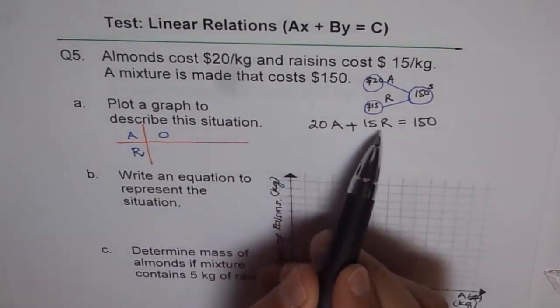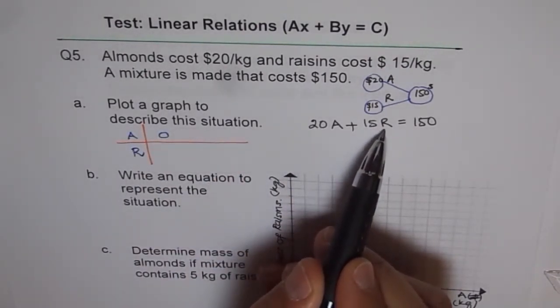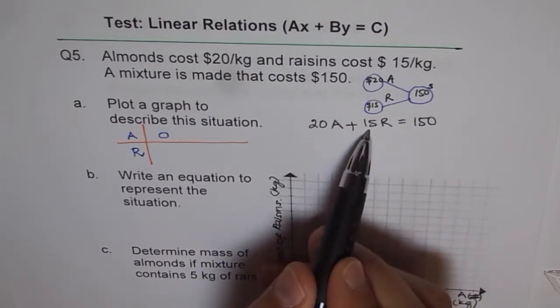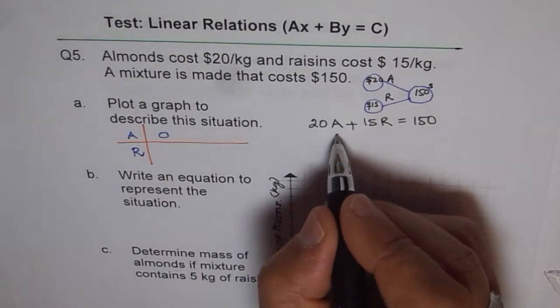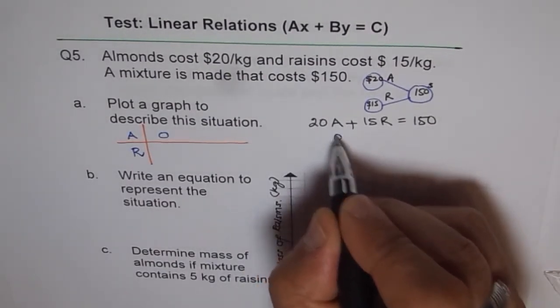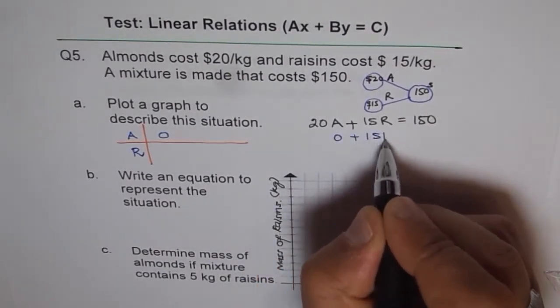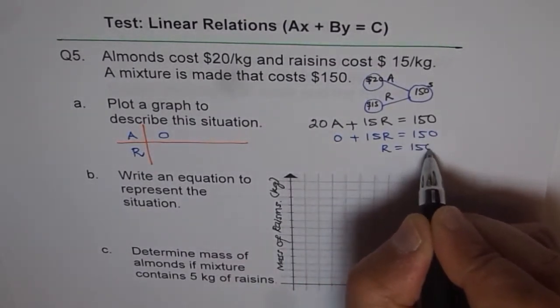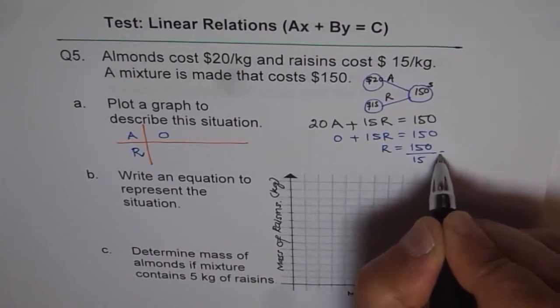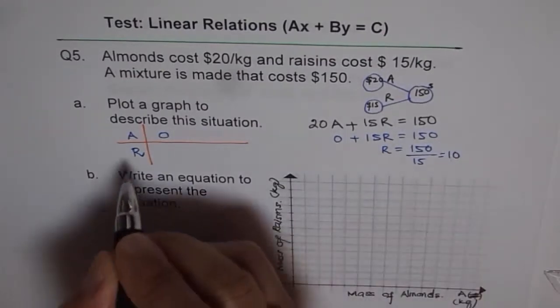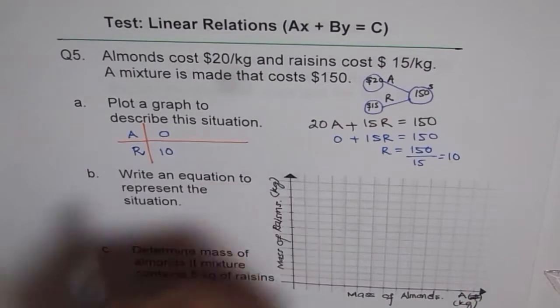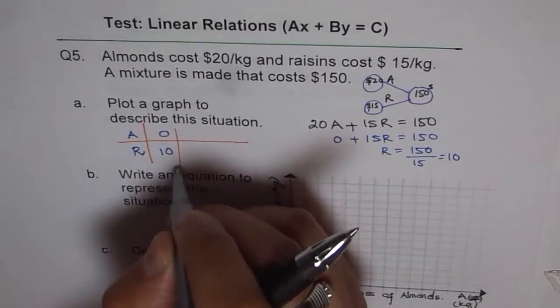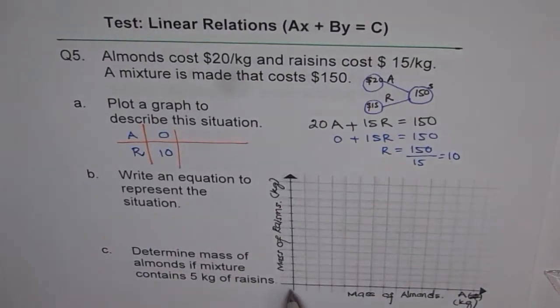So let us say A is 0. If A is 0 here, then what is R? R will be equal to 150 divided by 15. So let me show you. If I put A as 0, then this is 0 plus 15R equals 150. So R is equal to 150 over 15 and that gives me 10. So I get A as 0 and R as 10. So that is a good point to start with.